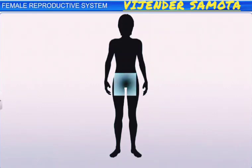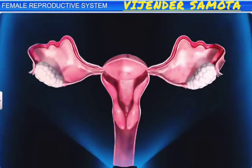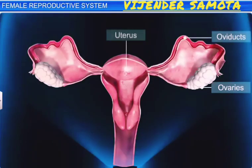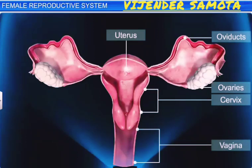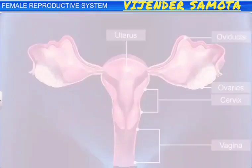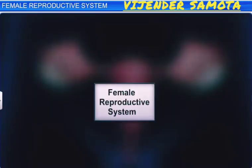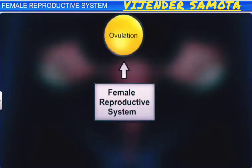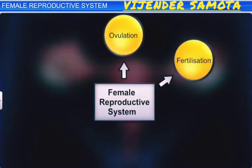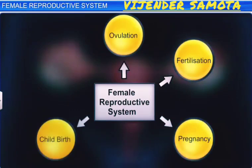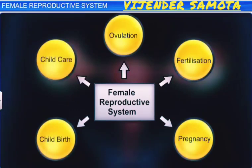The female reproductive system includes the ovaries, oviducts, uterus, cervix, vagina, and the external genitalia, located in the pelvic region. Along with a pair of mammary glands, it supports the process of ovulation, fertilization, pregnancy, childbirth, and child care.